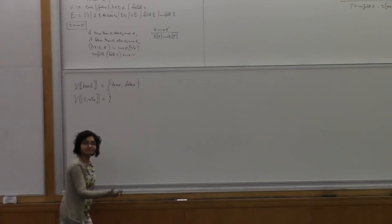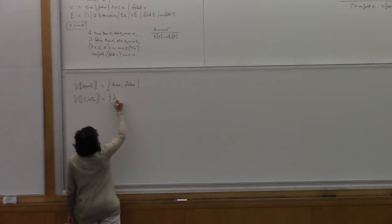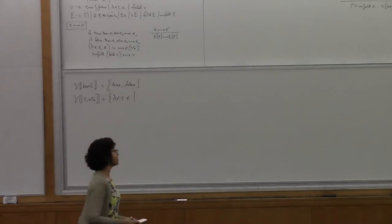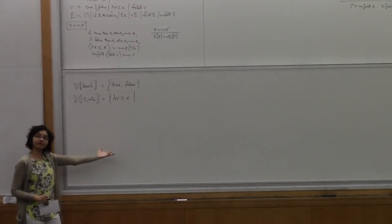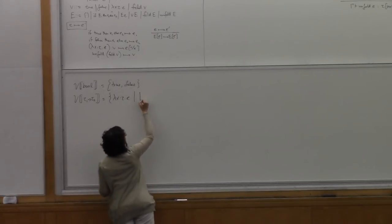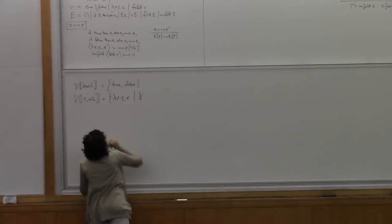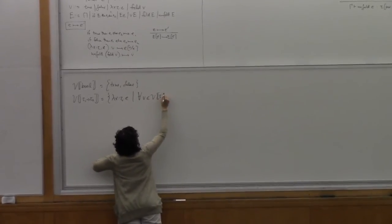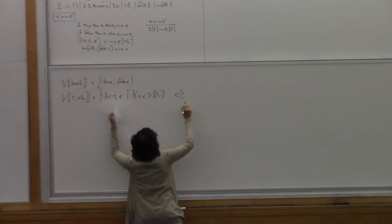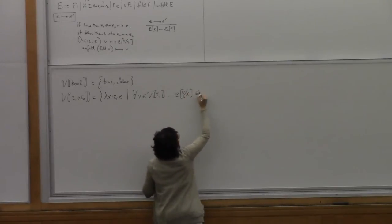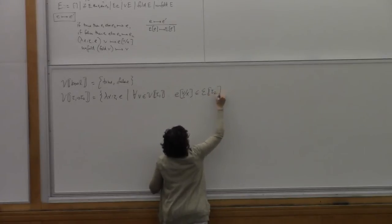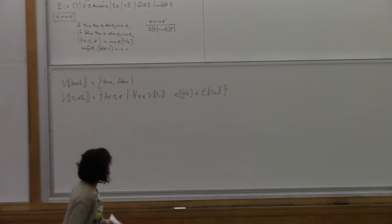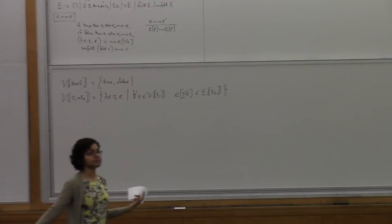The value form for functions is lambda. When we set up these logical relations, in order to say when a lambda belongs to this function type, we think about how we use that lambda — the elimination form issue. A lambda x dot e belongs to the interpretation of tau1 arrow tau2 if, for any argument valid at type tau1, applying the function to that argument gives something in the term interpretation of the result type tau2.